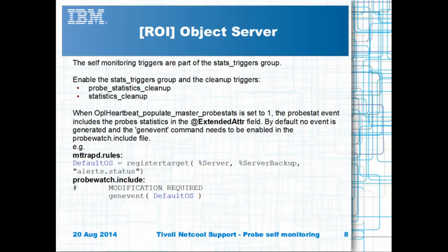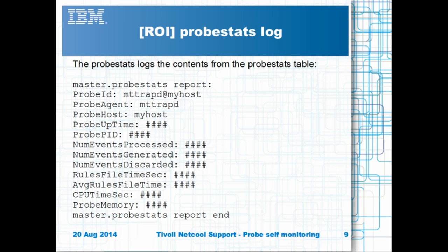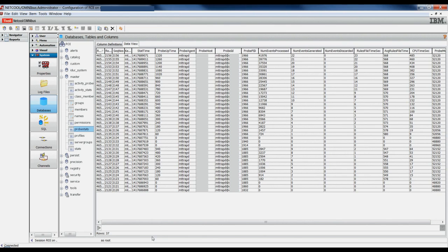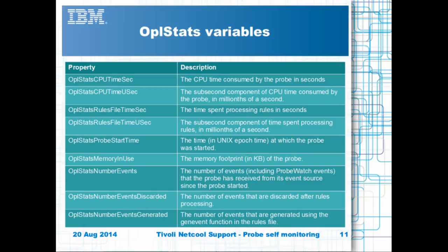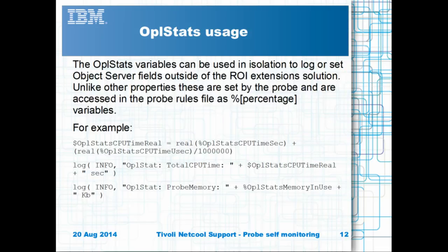For the OPL heartbeat to work, additional rules file edits are required. Set the default object server and configure the gen event statement in the probe watch include file as required. The object server statistics log logs the details from the probe statistics table as shown, as well as the general statistics. This table shows the available OPL stats variables. These percentage variables can be used to log details as required in the probe's log file, or used for custom statistics logging. In the given rules file example, the total CPU time is calculated and logged, along with the current memory usage.